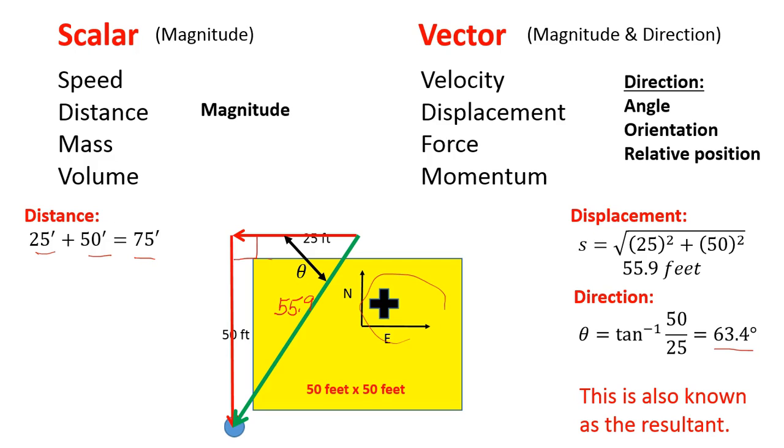This is also known as a resultant. You'll oftentimes hear that term in physics and in engineering as a resultant distance. Or sometimes people will just say, what's the magnitude of the distance traveled? Meaning, what was the vector distance?